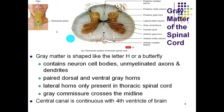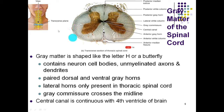The central canal, where we carry cerebrospinal fluid, is going to be right in the very center of the gray commissure. It's connected to that fourth ventricle, moving cerebrospinal fluid down through the center of our spinal cord. There's also subarachnoid space in the meninges that go around the spinal cord where cerebrospinal fluid flows as well.